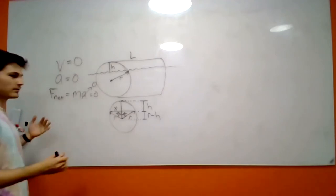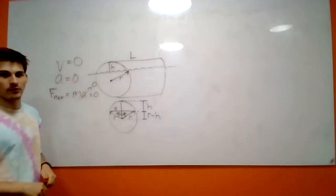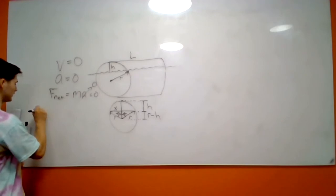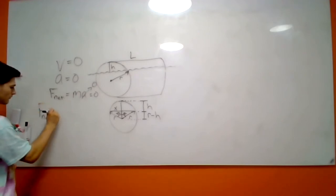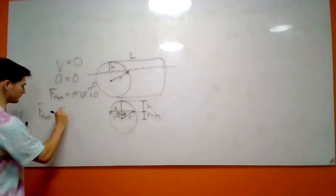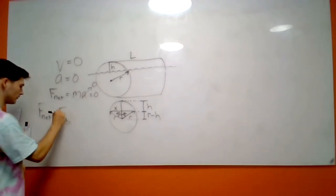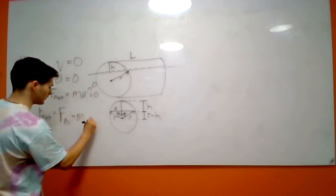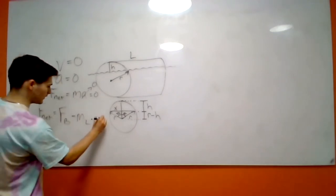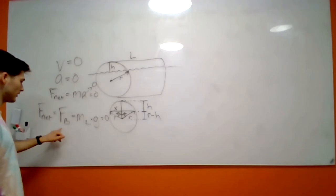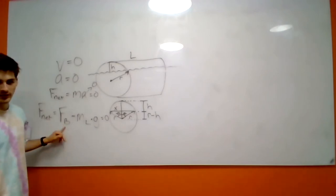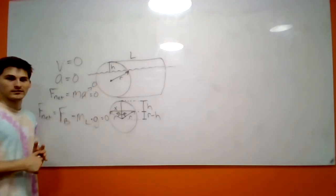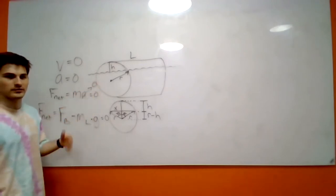So what's our net force? We certainly don't have no forces on it. We have the weight of our log and the buoyant force pushing up. So our net force is equal to the force of buoyancy minus the weight of our log — which is mass of the log times gravity — and that equals zero. So the force of buoyancy on our log equals the weight of the log. The force of buoyancy is actually just equal to the weight of the water displaced by the log as it enters the water.